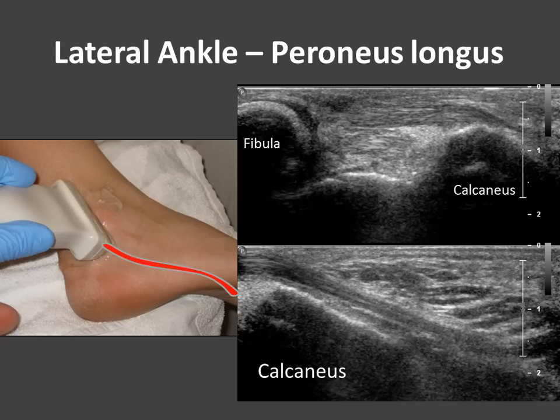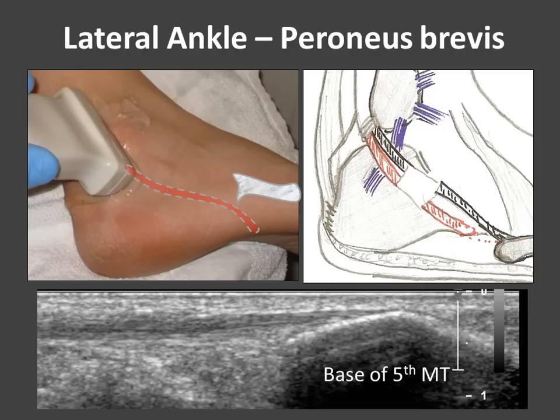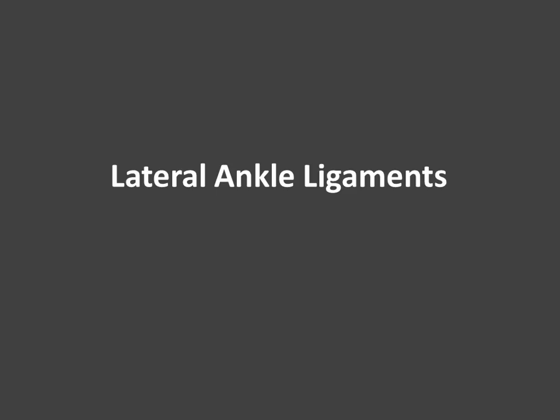Let's talk about the peroneus longus. If we place the probe in the longitudinal position, it can be followed along its course into the midfoot — it dives around the calcaneus. Here's peroneus brevis — it parallels peroneus longus, and we can follow it all the way along its length longitudinally to its insertion on the base of the fifth metatarsal.